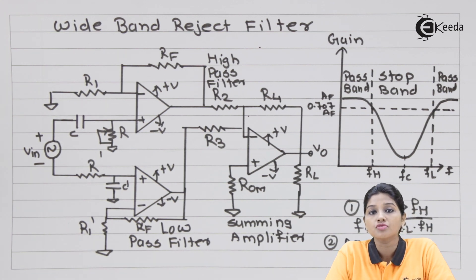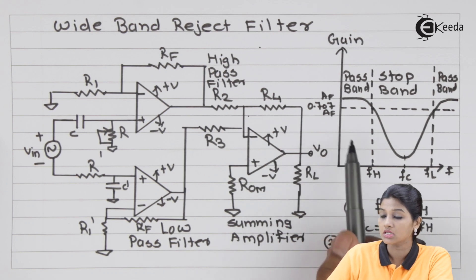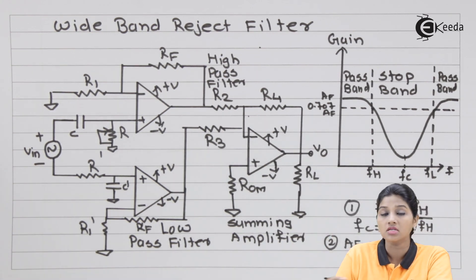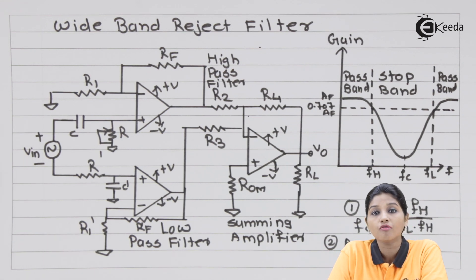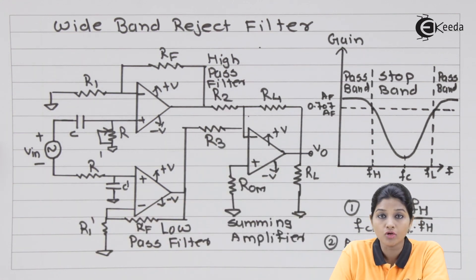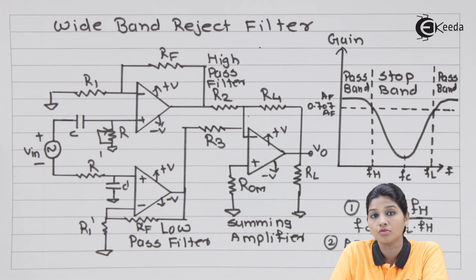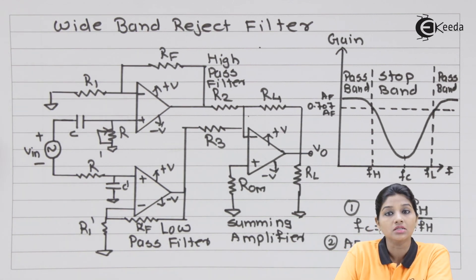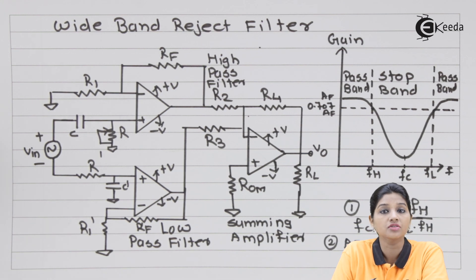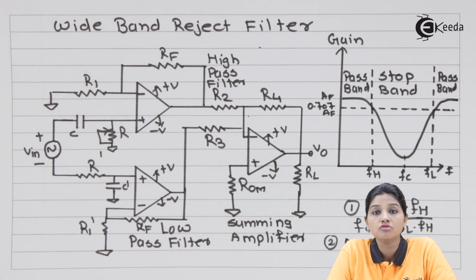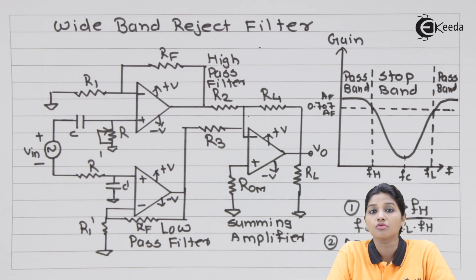From the frequency response, FH is the cutoff frequency of the low pass filter and FL is the cutoff frequency of the high pass filter, so the value of FL should be higher than FH. The gain of the high pass filter and low pass filter are required to be the same so that we can get a proper response at the output. The value of FC is the square root of FH multiplied by FL. The output of both the high pass filter and low pass filter is further given to the summing amplifier, as the frequency response is the combination of their individual responses.